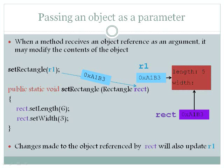The method setRectangle is illustrated below, showing that it accepts a rectangle object named rect. It then calls two methods setLength and setWidth. Changes made to the object referenced by rect will also update R1, because they have the same memory address.